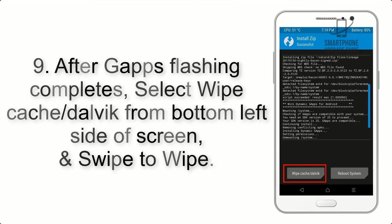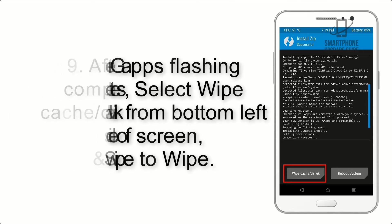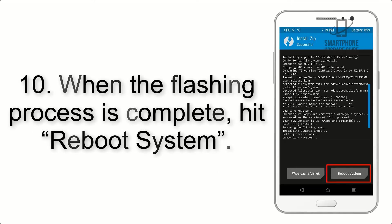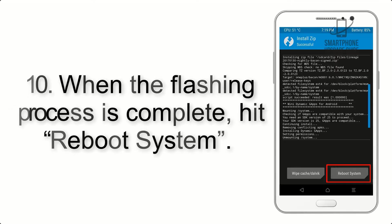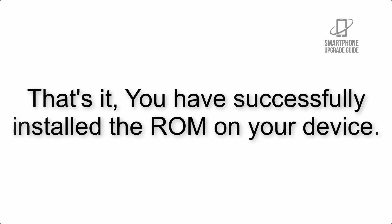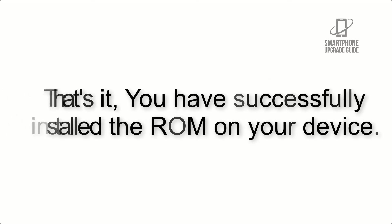Step 8: Flash the GApps zip package in the same manner. Step 9: After GApps flashing completes, select Wipe Cache and Dalvik from the bottom left side of the screen and swipe to wipe. Step 10: When the flashing process is complete, hit Reboot System. That's it — you have successfully installed the ROM on your device.